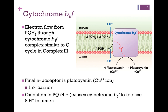Recall that with Complex 3, we passed the electrons to a soluble carrier, and we're going to do the same thing here. The electrons are passed through Cytochrome B6F to a soluble carrier — a protein soluble in the lumen — in this case, plastocyanin. It has a copper redox center, and again it's a one-electron carrier, so if we have 4 electrons to transfer, we need 4 carrier molecules.